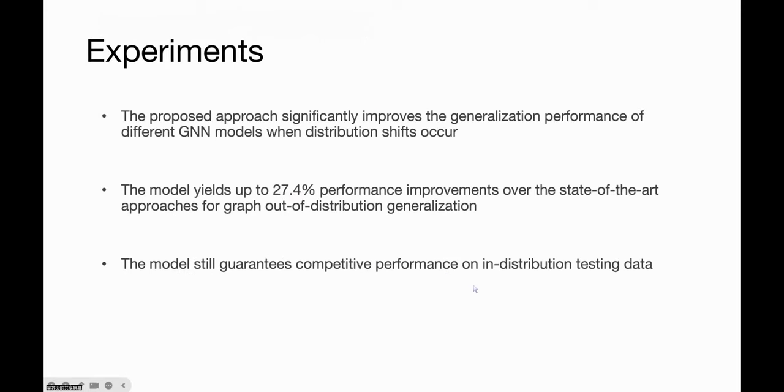We conduct extensive experiments to validate our model. The results show that the proposed approach significantly improves the generalization performance of different graph neural networks models when distribution shifts occur. The model yields up to 20% performance improvements over the state-of-the-art approaches for graph out-of-distribution generalization, and can still guarantee competitive performance on in-distribution testing data.